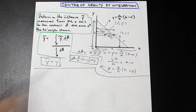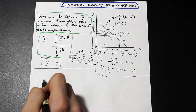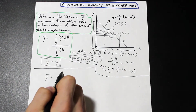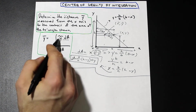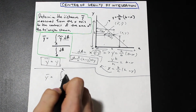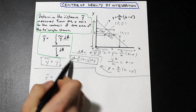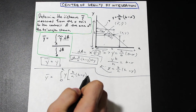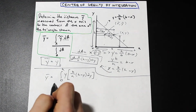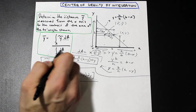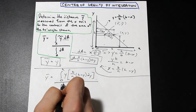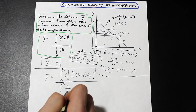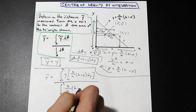Now that we've worked all that out, let's solve for the integration. We have y bar equals the numerator, which is the integral from zero to h of y tilde — which is y — times dA, which is (b/h)(h − y) dY. This is divided by the integral from zero to h of dA, which is (b/h)(h − y) dY.